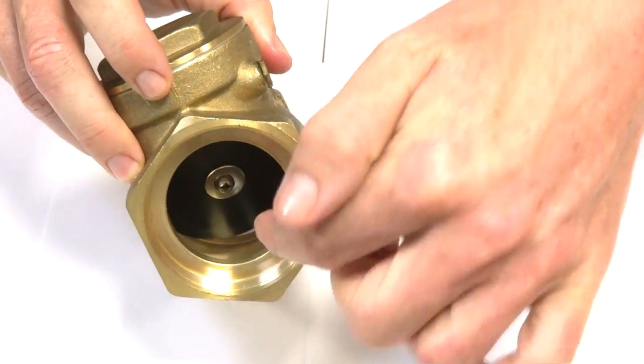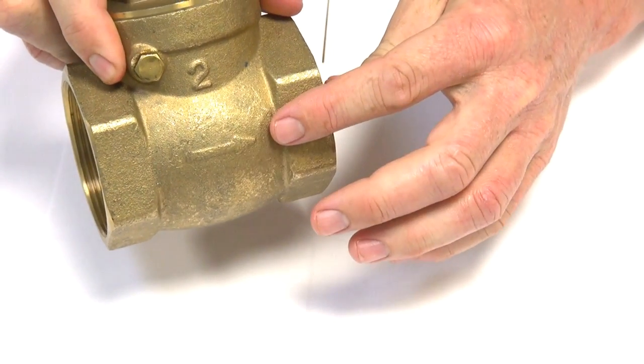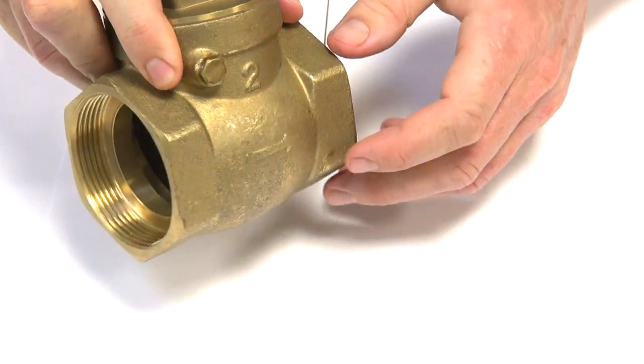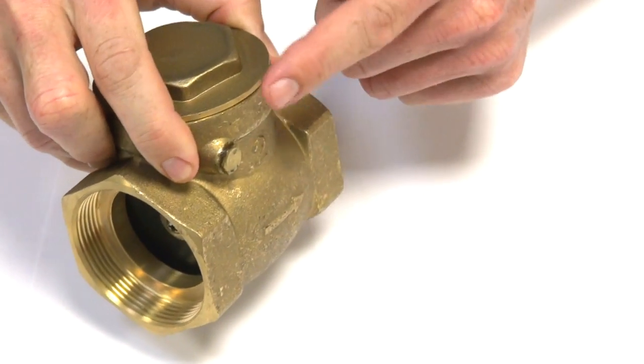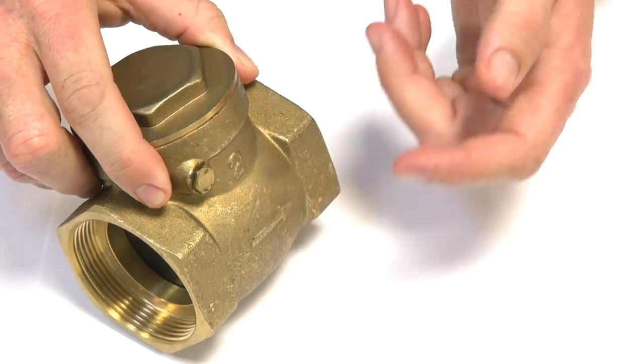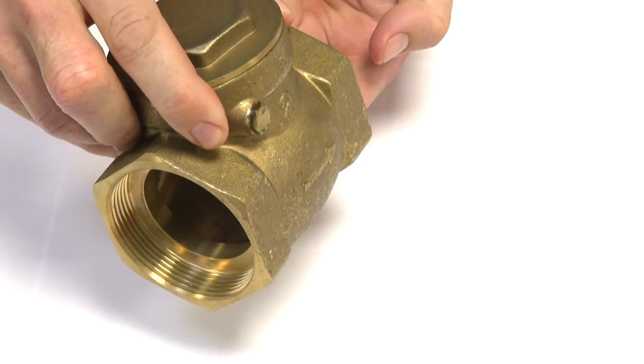Now when the fluid is going in this direction you can see the arrow which indicates the direction of flow. It pushes the gate up into this cavity at the top here so you'll get it out of the way of the flow.